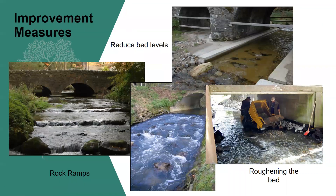Finally, the option we have developed in the guidance is improvement measures. This is where we modify the level and flow transition from upstream to downstream to remove the effect of the barrier. This can be achieved in a number of ways, as shown here, by the use of rock ramps of various types, reducing bed levels and roughening the bed to ease movement for fish.